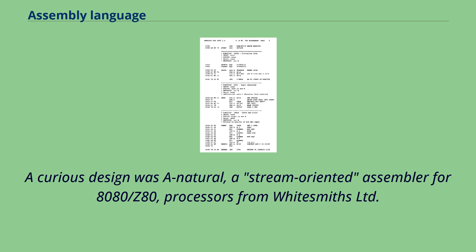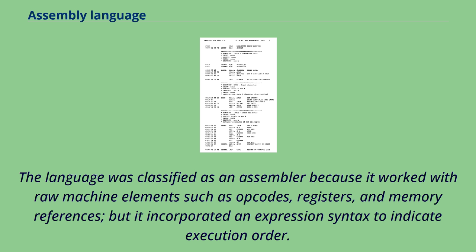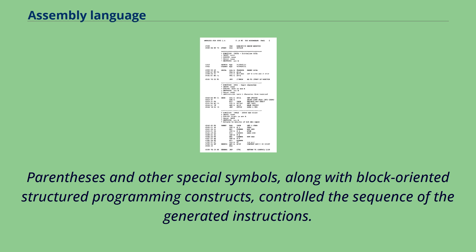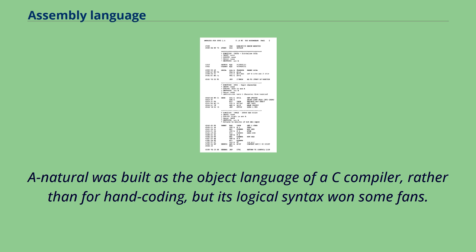A curious design was NATURAL, a stream-oriented assembler for 8080/Z80 processors from Whitesmiths Ltd. The language was classified as an assembler because it worked with raw machine elements such as opcodes, registers, and memory references, but it incorporated an expression syntax to indicate execution order. Parentheses and other special symbols, along with block-oriented structured programming constructs, controlled the sequence of the generated instructions. NATURAL was built as the object language of a C compiler, rather than for hand coding, but its logical syntax won some fans.